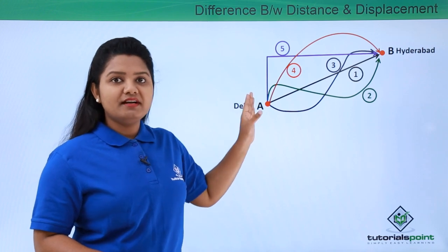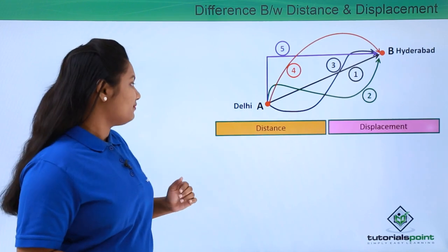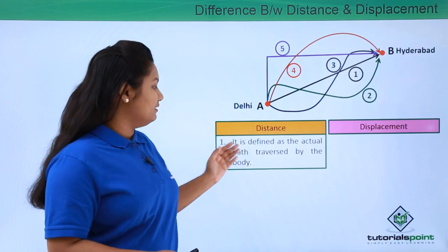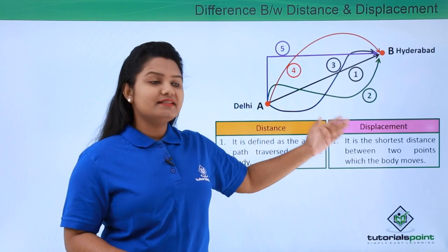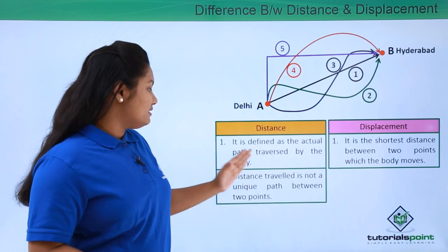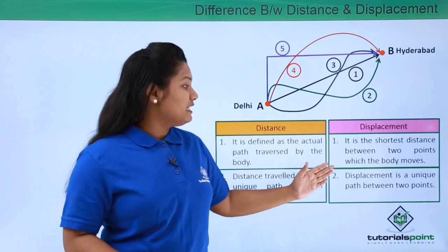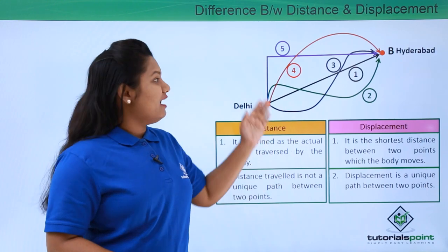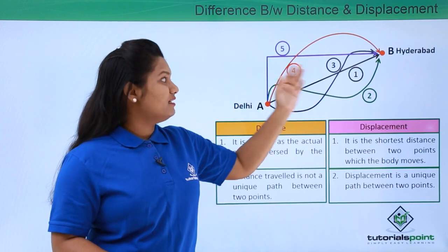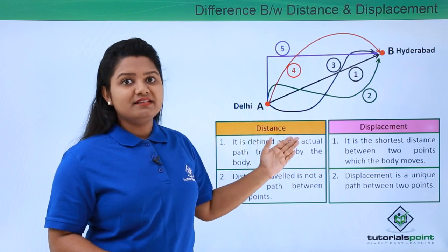From here we can figure out a few differences between the terms distance and displacement. We define distance as the actual path traversed by the body, but the displacement is the shortest distance between the two points which a body takes. Distance travelled is not a unique path between two points, but the displacement refers to a unique path between two points. As you can see, all the five paths give a certain distance between the two points, but the displacement is given by only one path — path number one — and so we call it unique.